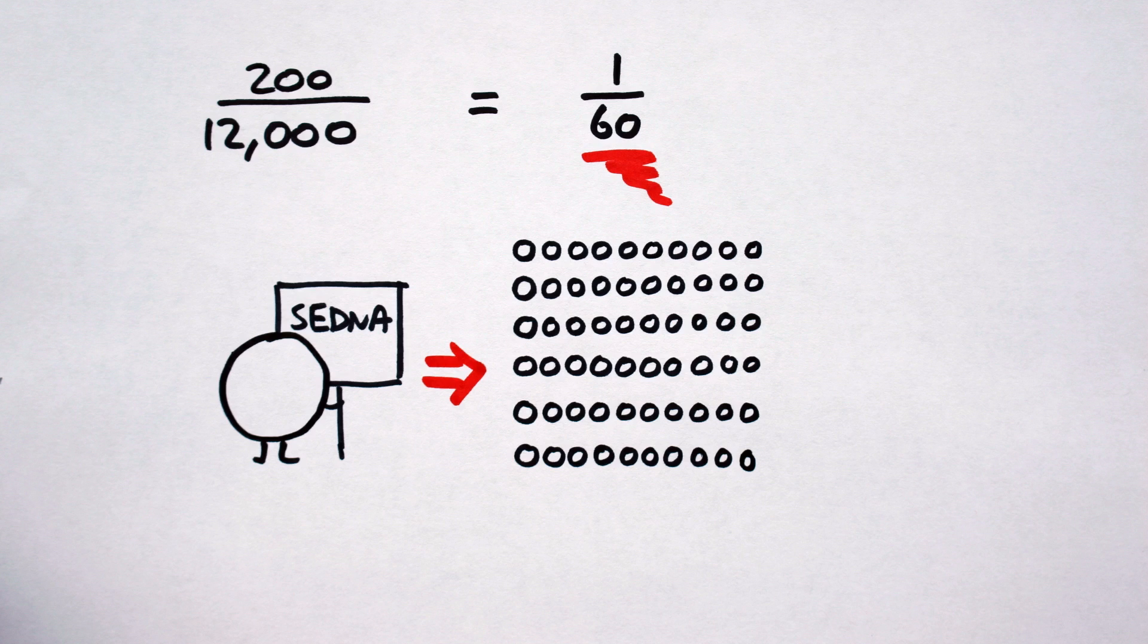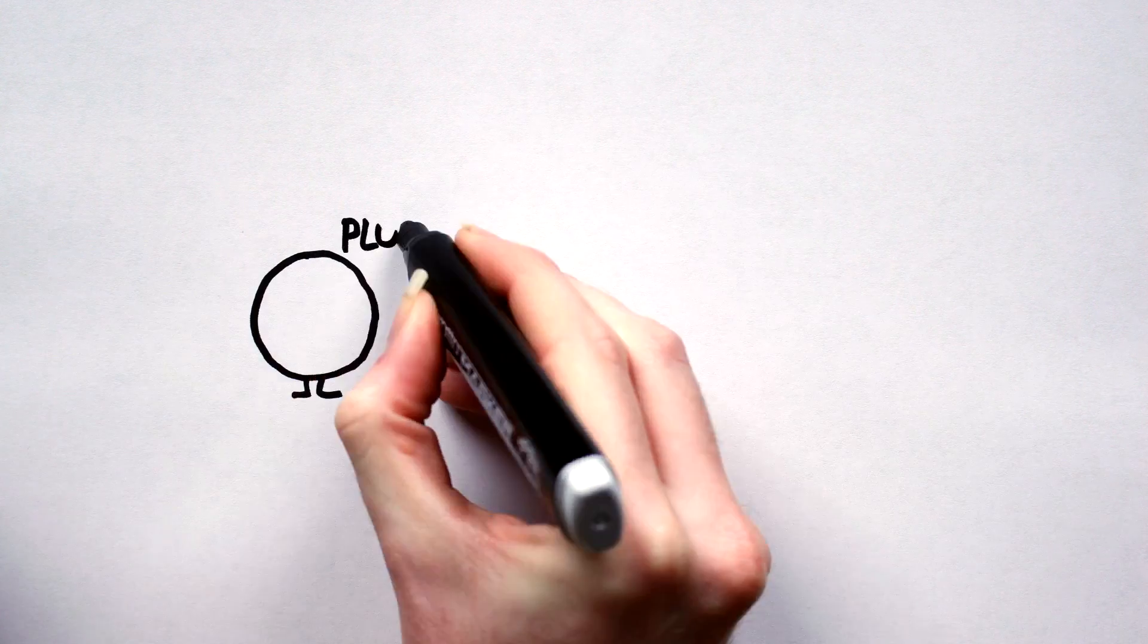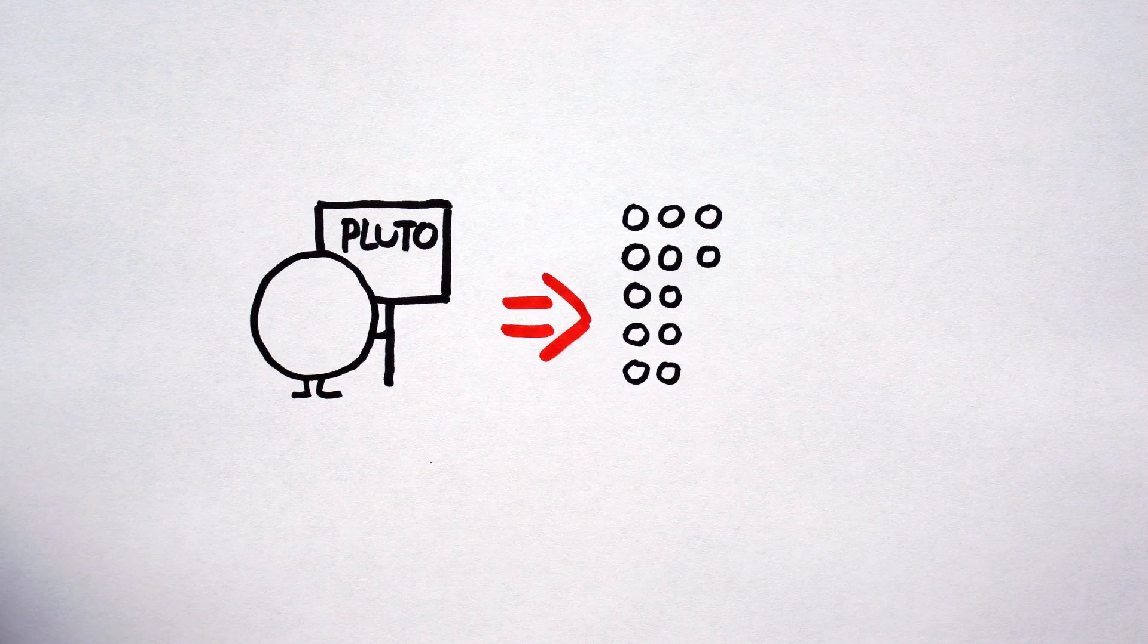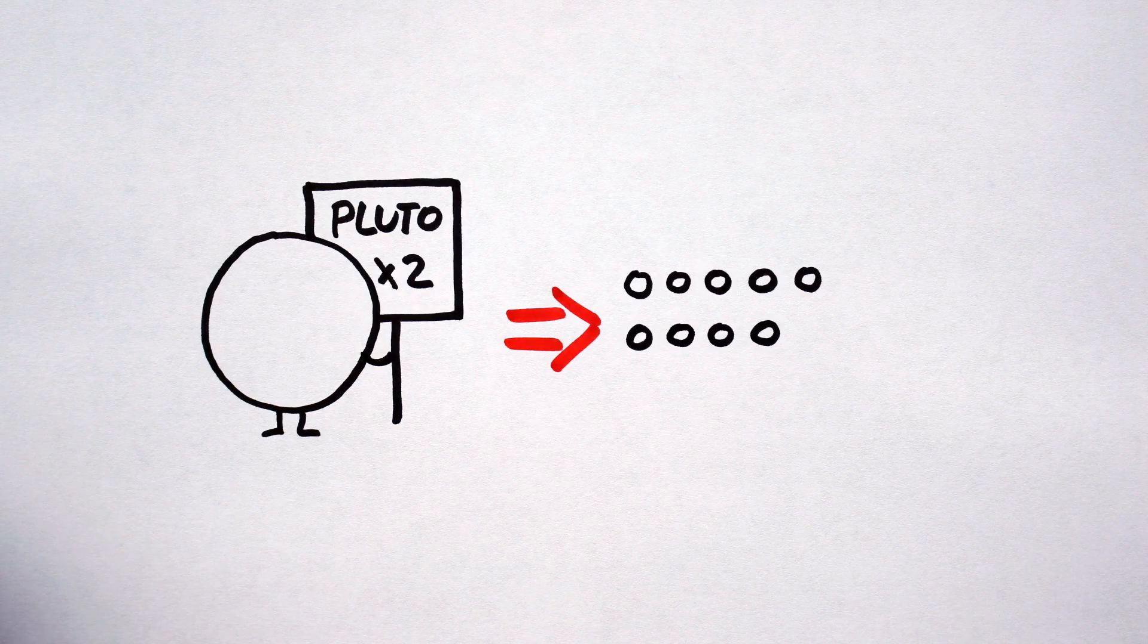Extrapolating and applying this logic to the other Kuiper Belt dwarf planets yields the following estimates. It's probable that out there, there are 30-ish Pluto-sized objects, about 10-ish objects, two times the size of Pluto.